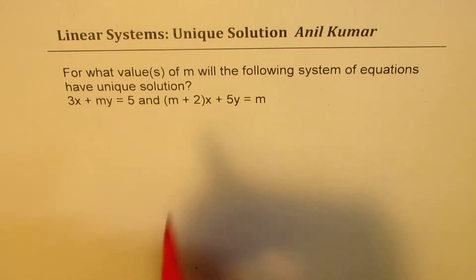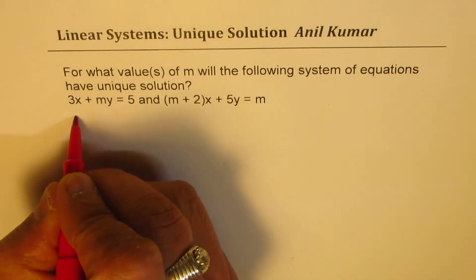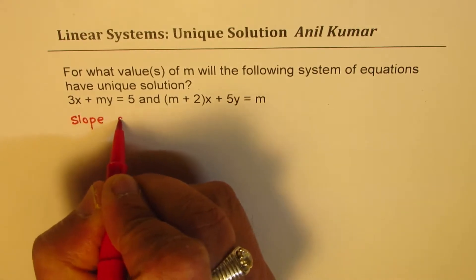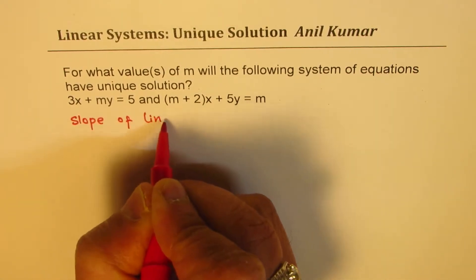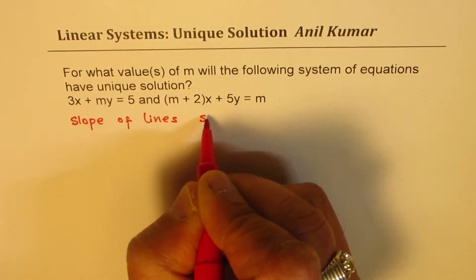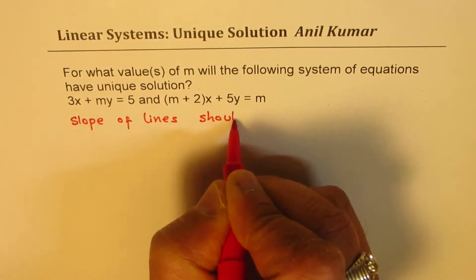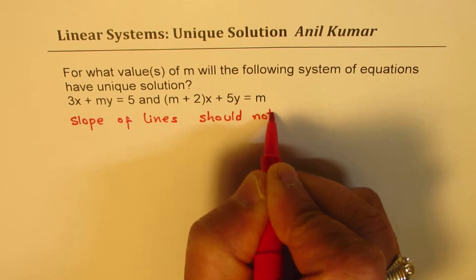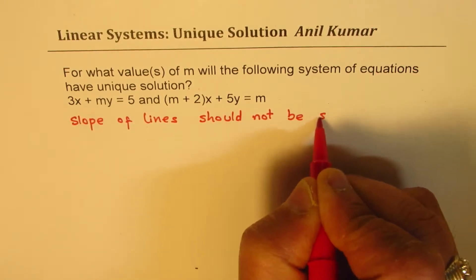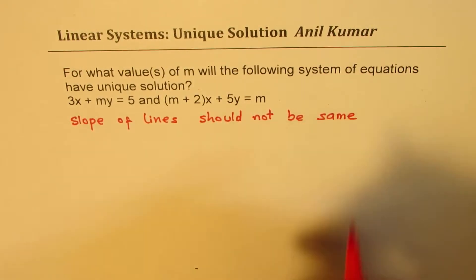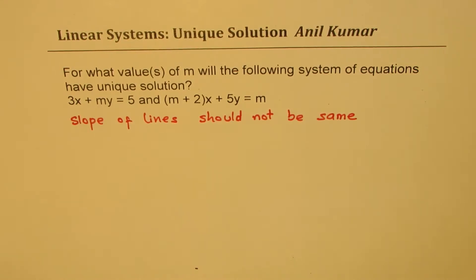We want that the slope of lines should not be same. So what we are looking for is slope of lines should not be same, then we have unique solution for a system of linear equations.